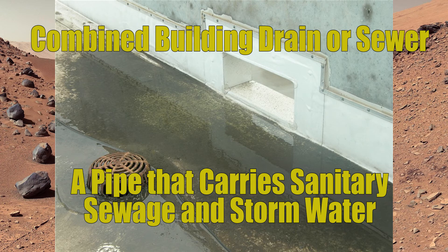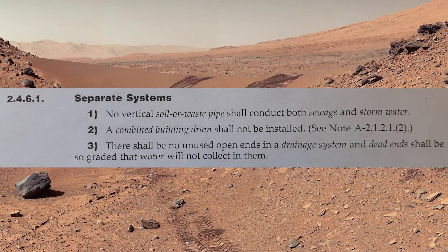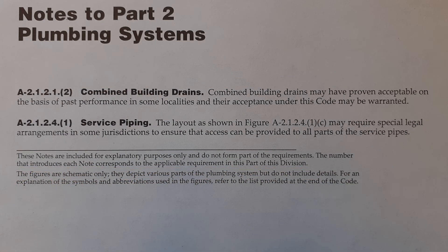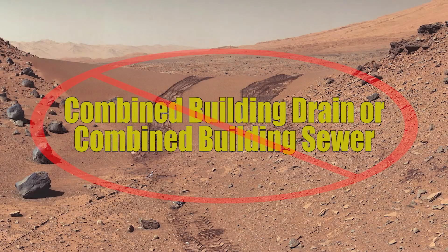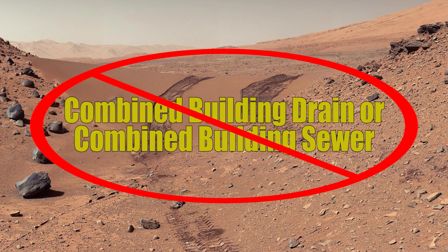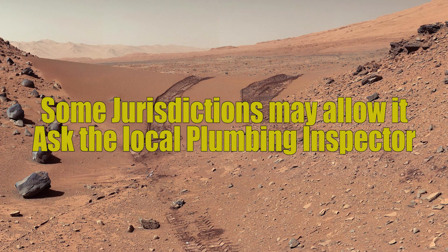The plumbing code does have something to say about combined building drains. Clause 2461, part 2: a combined building drain shall not be installed. There is however a note — A21212 — which says combined building drains may have proven acceptable on the basis of past performance in some localities, and their acceptance under this code may be warranted. In short, installing combined building drains is prohibited, with the exception of some communities that will allow it. The only way to find out whether you're allowed to install one is to talk to the authority having jurisdiction — that would be the local plumbing inspector.